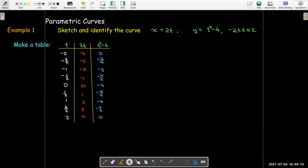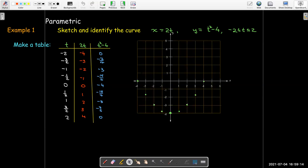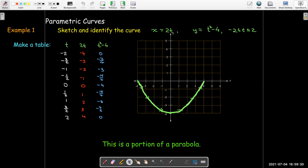Now I can just plot these as x-y pairs. And I get these dots right here. And it's very difficult to make a smooth curve. So to help me, I'm first going to connect them with line segments and then try to draw a smooth curve over them. And this is just a portion of a parabola.